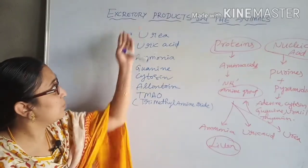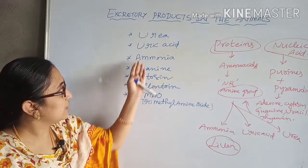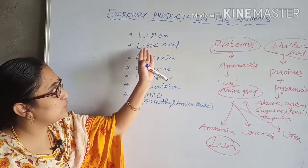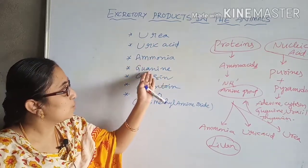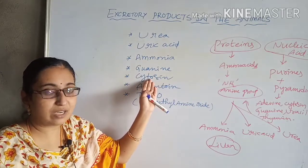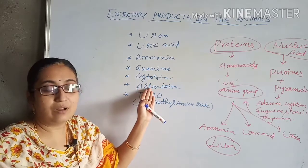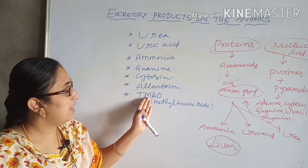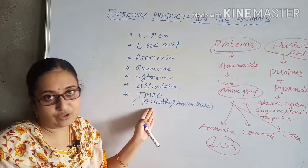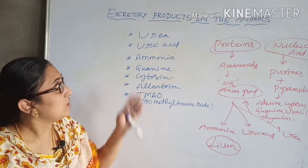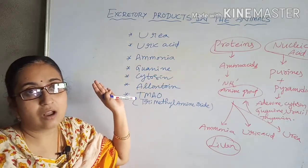The three most common excretory products — urea, uric acid, and ammonia — are observed across all organisms. Guanine and cytosine are seen in arthropods (invertebrate animals). Allantoin is seen in birds and some arthropods. Trimethyl amine oxide is seen in aquatic organisms, particularly aquatic vertebrates like fishes. These are the main excretory products produced by organisms.